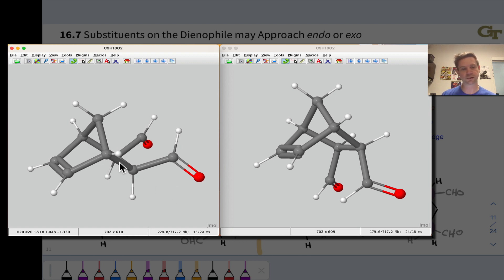The newly formed sigma bonds are here and kind of in the back there. We have the aldehyde groups pointed up, and the carbon-carbon double bond pointed down, opposite sides of those newly formed sigma bonds.